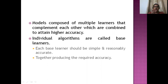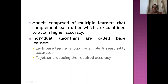Individual models in this case will be called base learners. Base learners are separate when implemented. Individual accuracy alone is not enough, and individual learners can be very complex. That is why the complexity of simple learners is combined together.